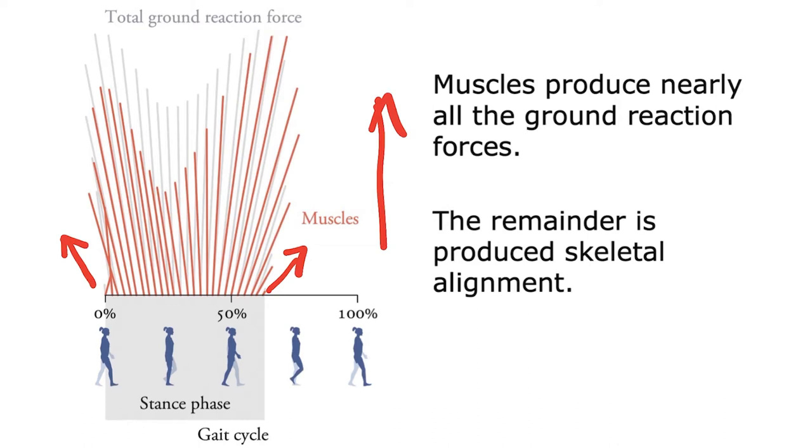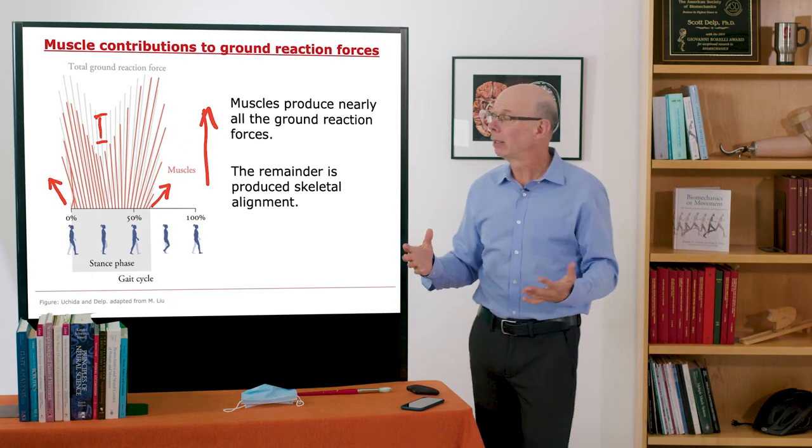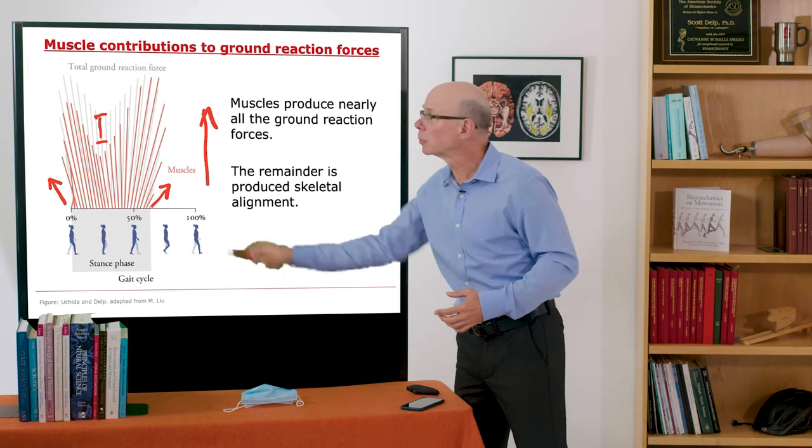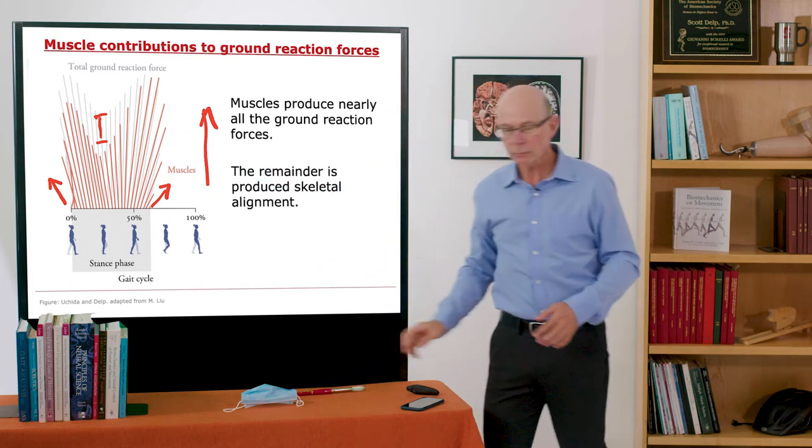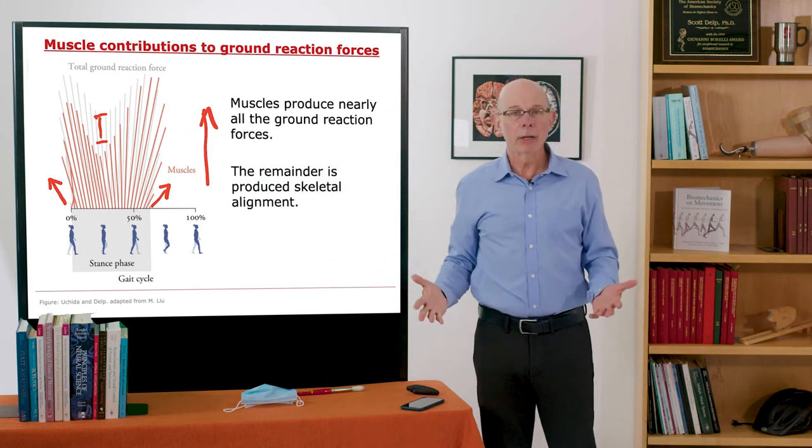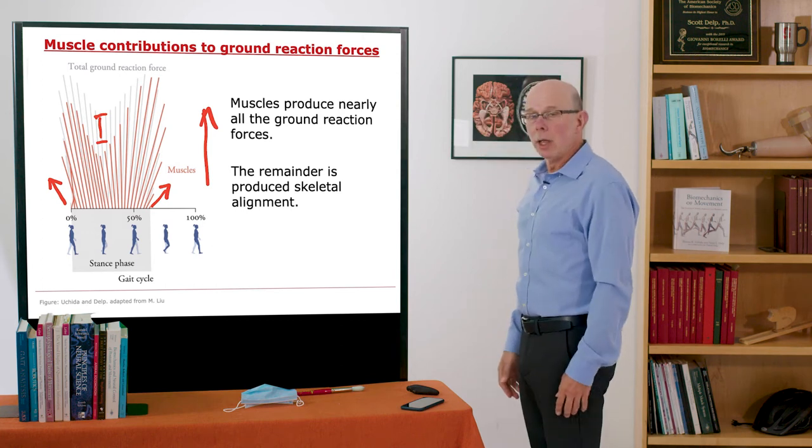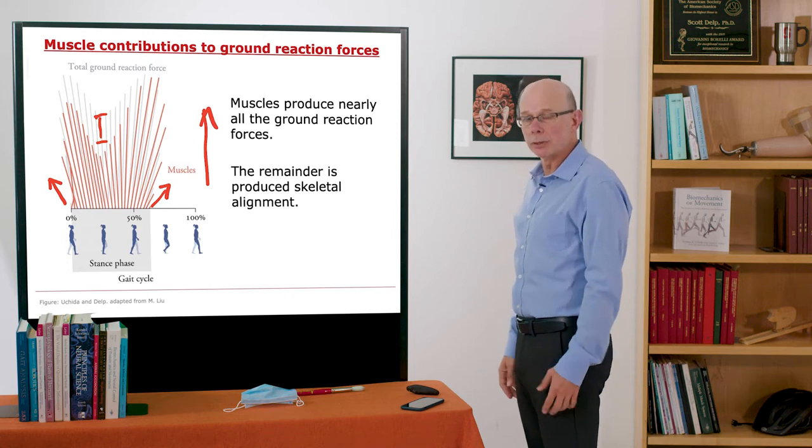Muscles in walking don't produce all of the ground reaction force. There's a little bit of difference between the red here and the grayed out in the back. So what is it that produces that additional ground reaction force, the difference between the gray here and the red here? It's alignment of the skeleton. When we're nearly aligned, our skeleton lines up and produces some ground reaction force, even absent muscle.